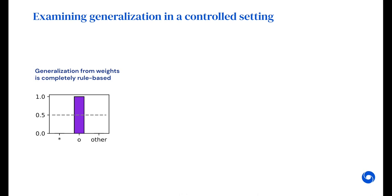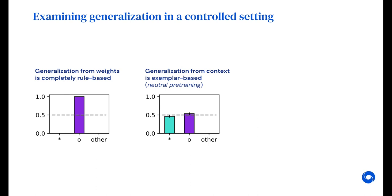In contrast, generalization from in-context information was exemplar-based. This happens if we pre-train the model in a neutral way that doesn't encourage either types of generalization behavior.